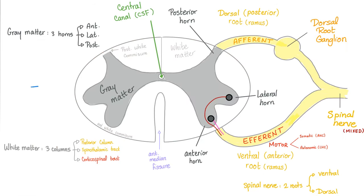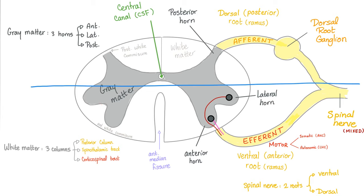Here is your spinal cord. Draw that beautiful line in the sand: anything behind it is sensory, anything in front of it is motor. Each spinal cord segment has three horns of the gray matter: posterior horn, lateral horn, anterior horn. Three columns of the white matter: posterior column, spinothalamic tract, and corticospinal tract. We have two roots — ventral and dorsal — and an anterior median fissure and a posterior median sulcus.